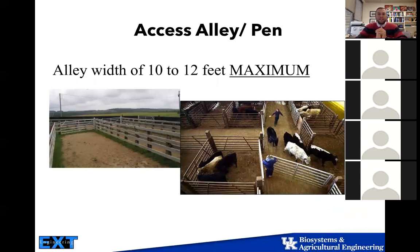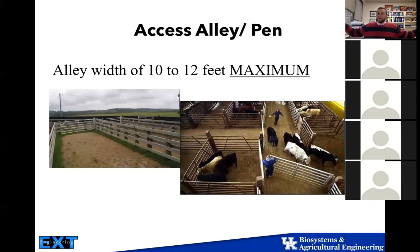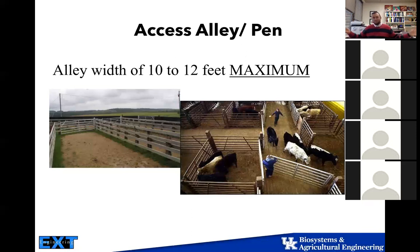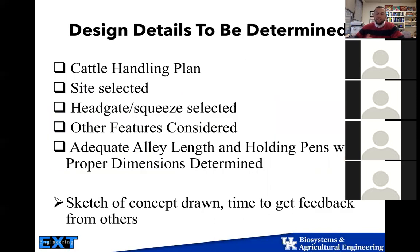The access alleyway needs to be a maximum of 10 to 12 feet. The reason is that a person can extend both arms wide out and push cattle fairly easily. If they're about six feet tall with a six-foot wingspan, that gives about two feet on each side to stop animals from getting by you. At 12 feet you're at about the maximum — if you go to 16 feet, you're going to have more space for the animal to get around you. So keep that maximum access alley to 10 or 12 feet.